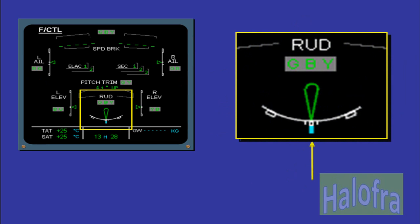The green rudder symbol is used as an index to display the movements of the rudder on a white scale. The servo control status is displayed on top of the rudder indication. The rudder trim is indicated by a small blue line below the scale. When used, the rudder trim will move the neutral point of the rudder surface and change the rudder pedal's position. The hydraulic systems actuating each control surface are indicated on the ECAM flight control page by G, B, and Y — for example, the rudder is powered by the green, blue, and yellow hydraulic systems.